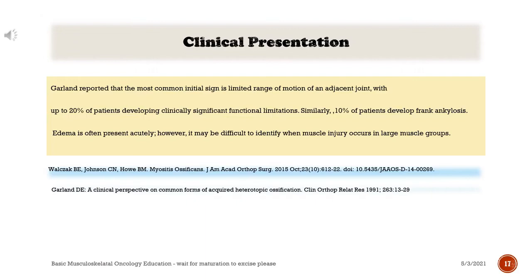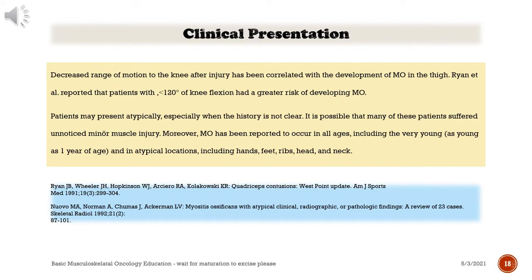Decreased range of motion to the knee after injury has been correlated with development of myositis ossificans in the thigh. Ryan et al. reported that patients with below 120 degrees of knee flexion had a greater risk of developing myositis ossificans. Patients may present atypically, especially when history is not clear. Myositis ossificans has been reported to occur in all ages, including as young as 1 year of age, and in atypical locations including hands, feet, ribs, head, and neck.